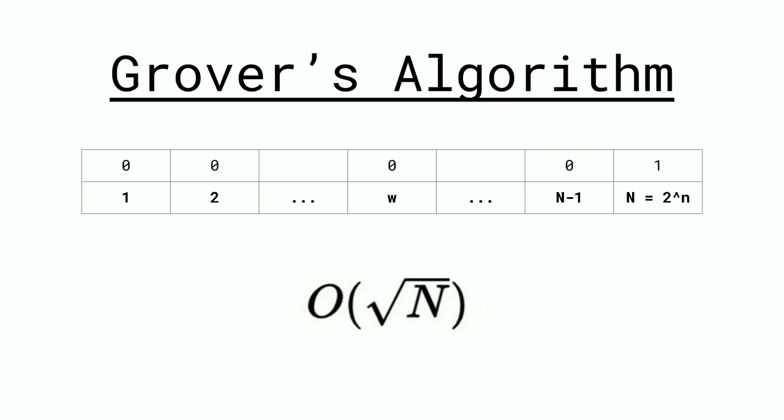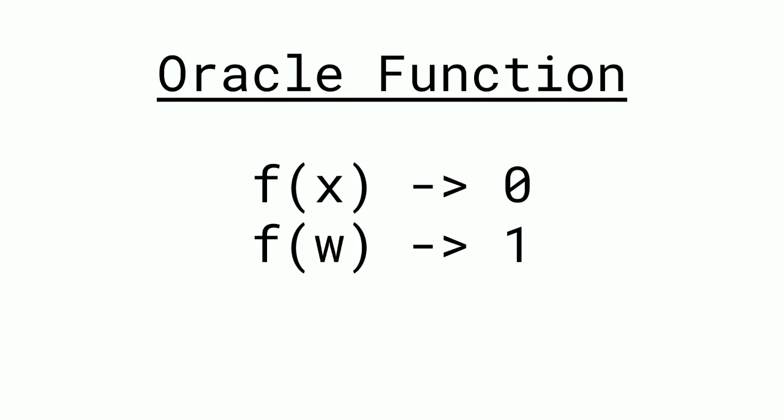As you can see, a very big speed up. So just like the Deutsch-Jozsa problem, what we're going to do is have an oracle function, which we're going to put qubits in superposition through.